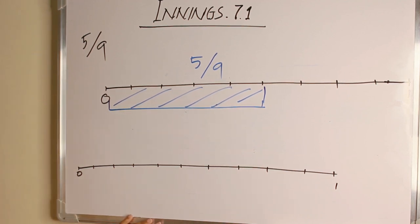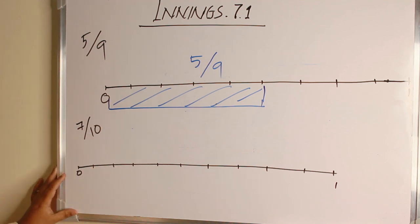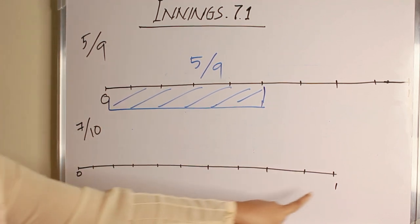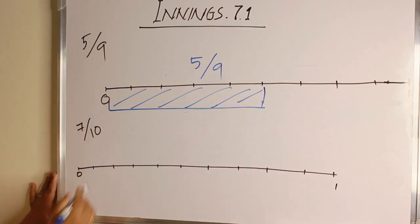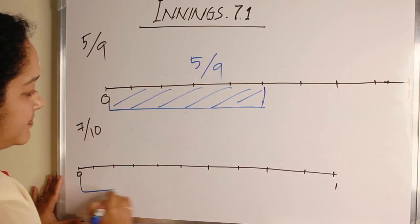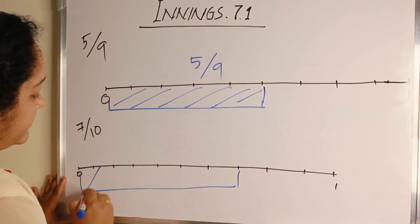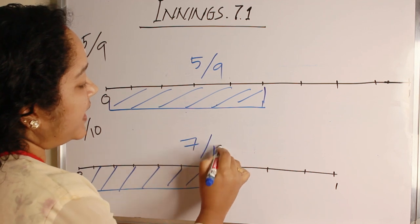The next question is 7 by 10. The denominator is 10. So 1 unit is divided into 10 equal parts. Numerator is 7. So 1, 2, 3, 4, 5, 6, 7. The shaded part is 7 by 10.